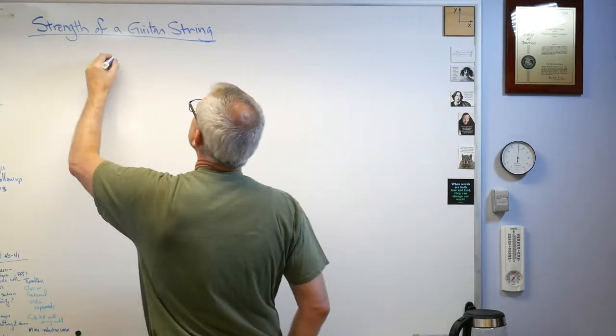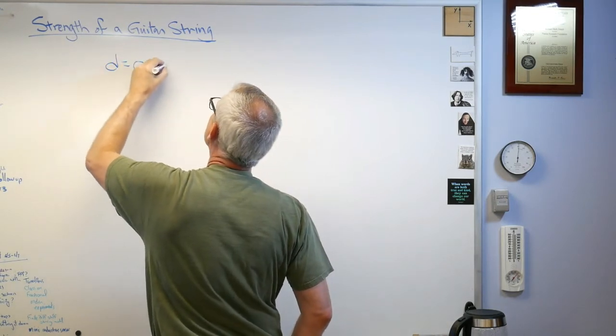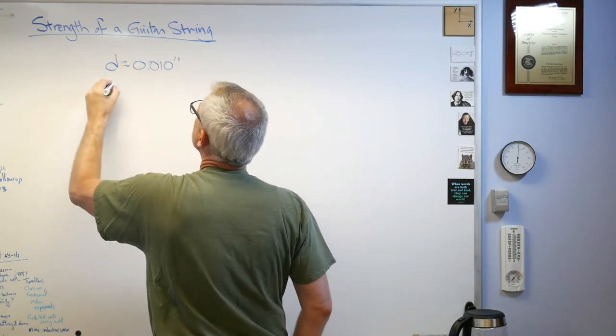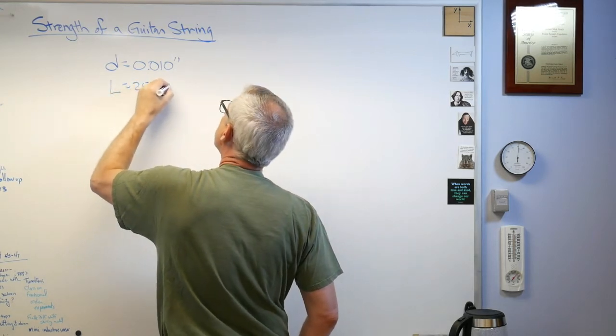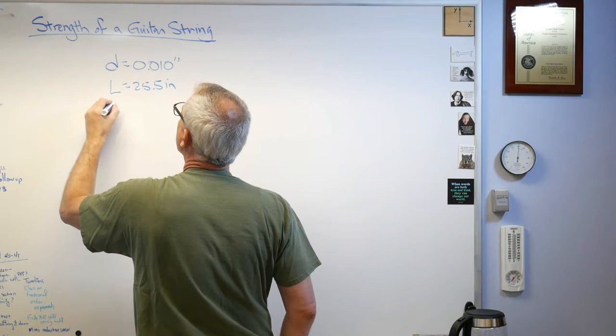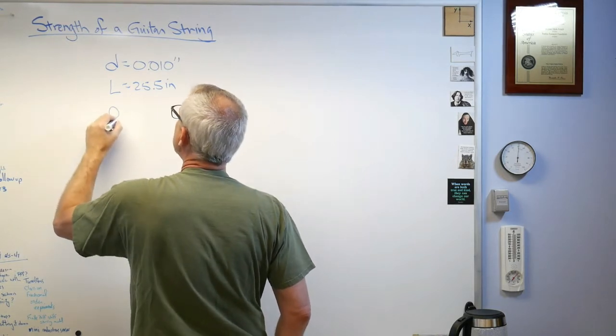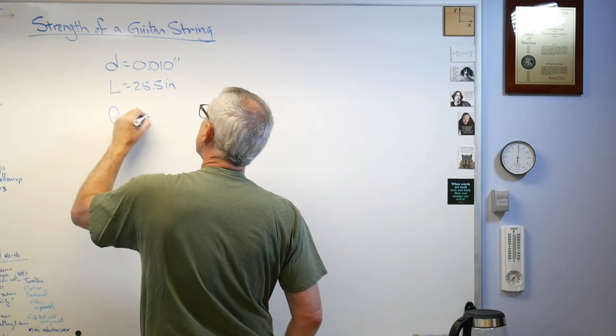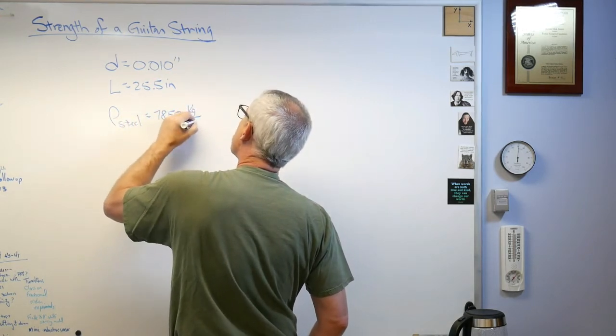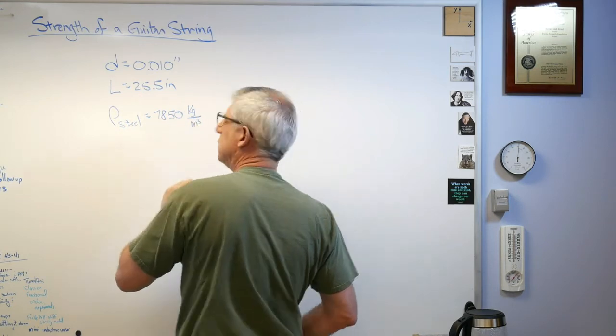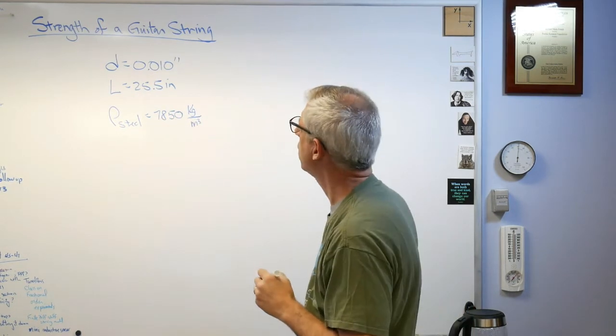We're going to need a couple of numbers here. The diameter of this string is 0.010 inches. Its length is 25.5 inches, and the density of the steel is 7850 kilograms per cubic meter.